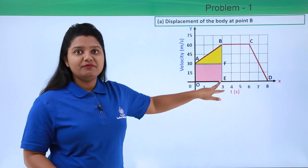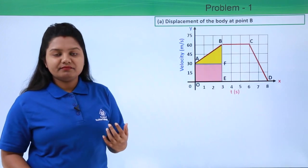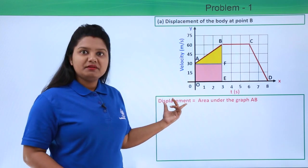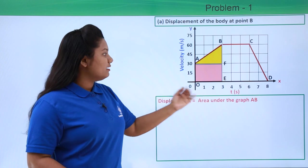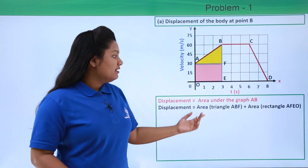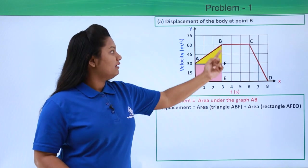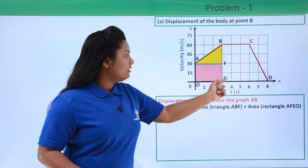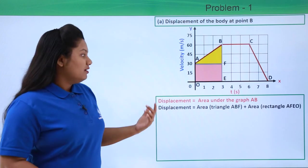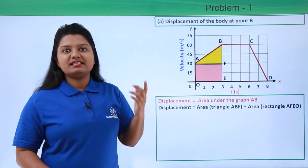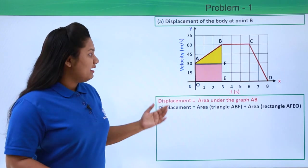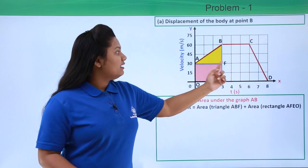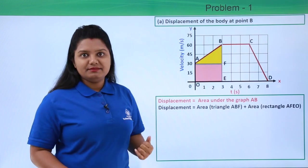Let us take point F and point E, where the rectangle touches the x-axis. The displacement is the area under graph AB, which equals the sum of the area of triangle ABF (the yellow triangle) and the area of rectangle OAFE (the pink rectangle). The area of a triangle is half times base times height, and the area of a rectangle is length times breadth. In triangle ABF, AF is the base and BF is the height.